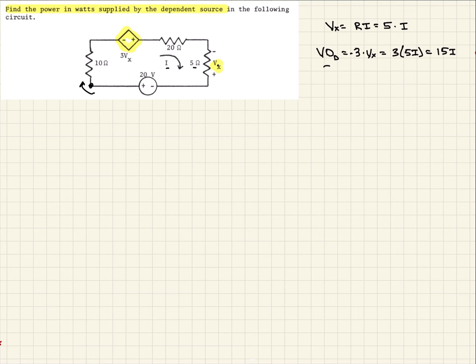So when we do that, first thing we encounter is the 10-ohm resistor, and so that will be 10 times I. All right, so then we continue around our loop, and we come to our dependent source here. And when we do that, we already know we calculated that over here, and so we know that that is 15I.